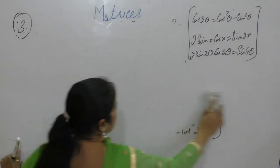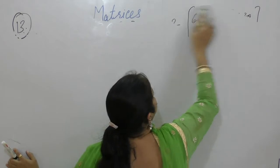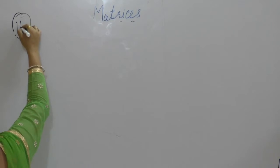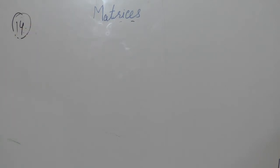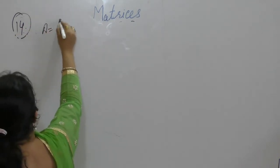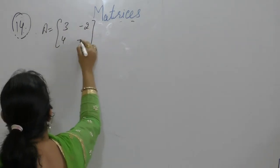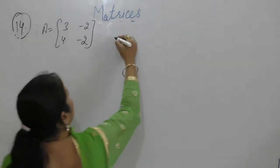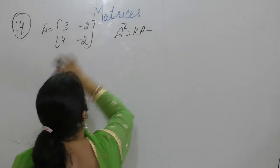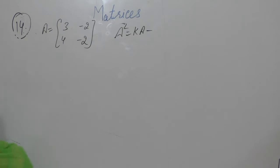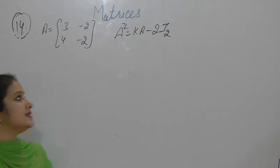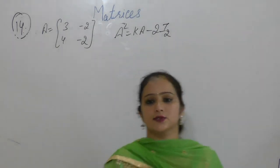Now the next one is question number 14. If A equals [[3, -2], [4, -2]], find k such that A squared equals kA minus 2I, where 2I means the identity matrix of order 2.